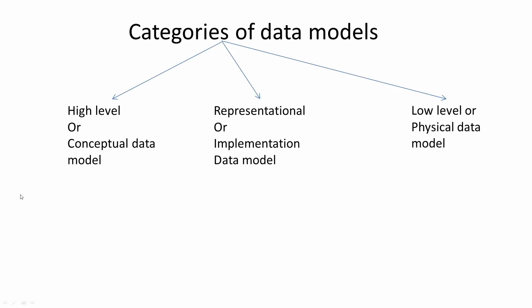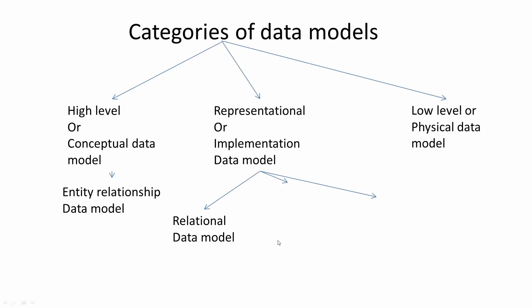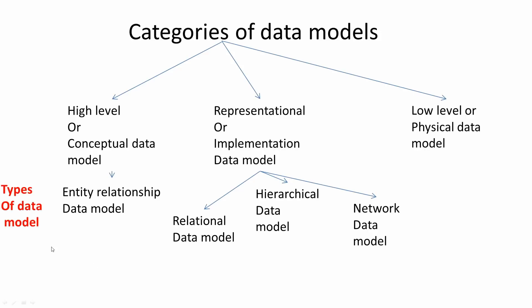For example, in the high level data model category, we have the entity relationship model. In the representational or implementational category, we have three other data models: relational data model, hierarchical data model, and network data model. There is no specific type of data model that falls under the physical data model category.